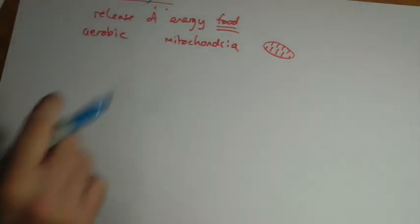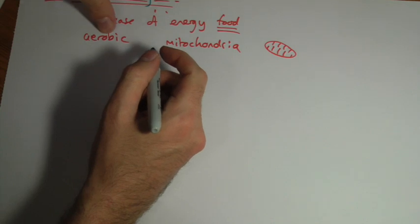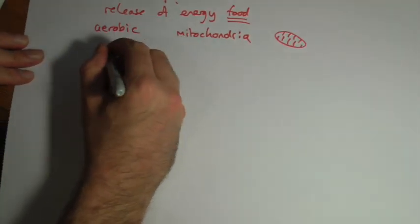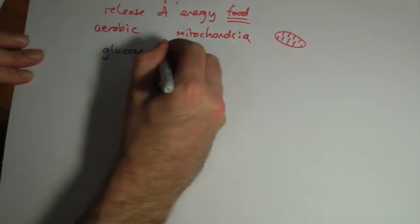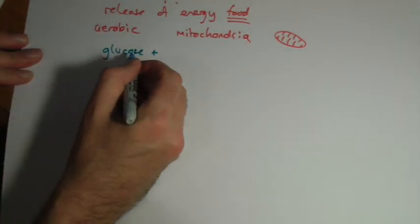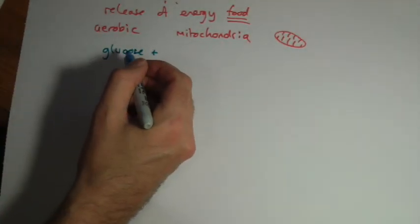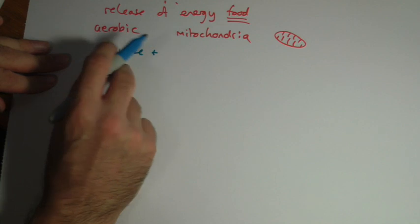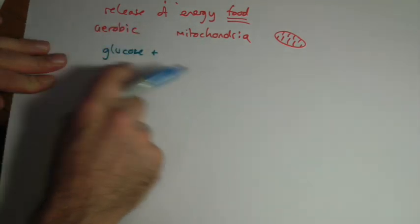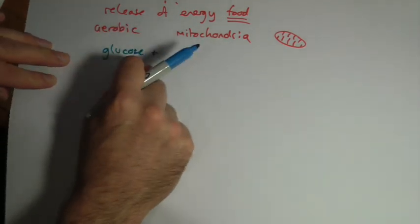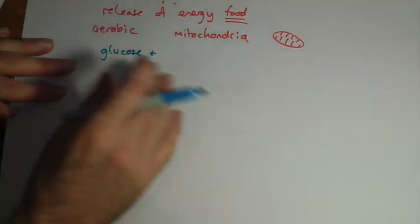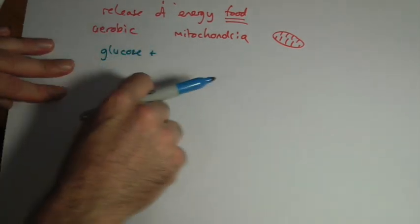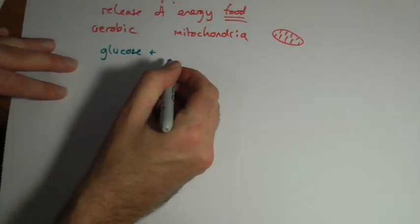You need to remember the formula for it. Be careful if a question asks you for the word formula, then they're expecting you to write the words down. It starts with glucose. Yes we can use other things here, but the formulas that we're looking at will always use glucose. We could put fat or lipid in here, we could put different sugars, sucrose, maltose, all those kind of things, but we start with glucose.